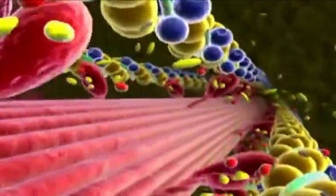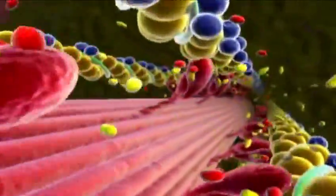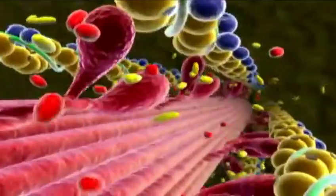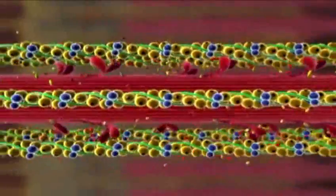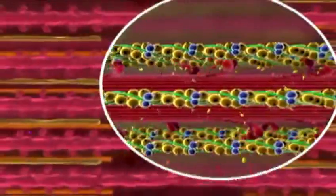As long as the binding sites on actin remain exposed, the crossbridge cycle will repeat. And as the cycle repeats, the thin myofilaments are pulled toward each other and the sarcomere shortens. This shortening causes the whole muscle to contract.